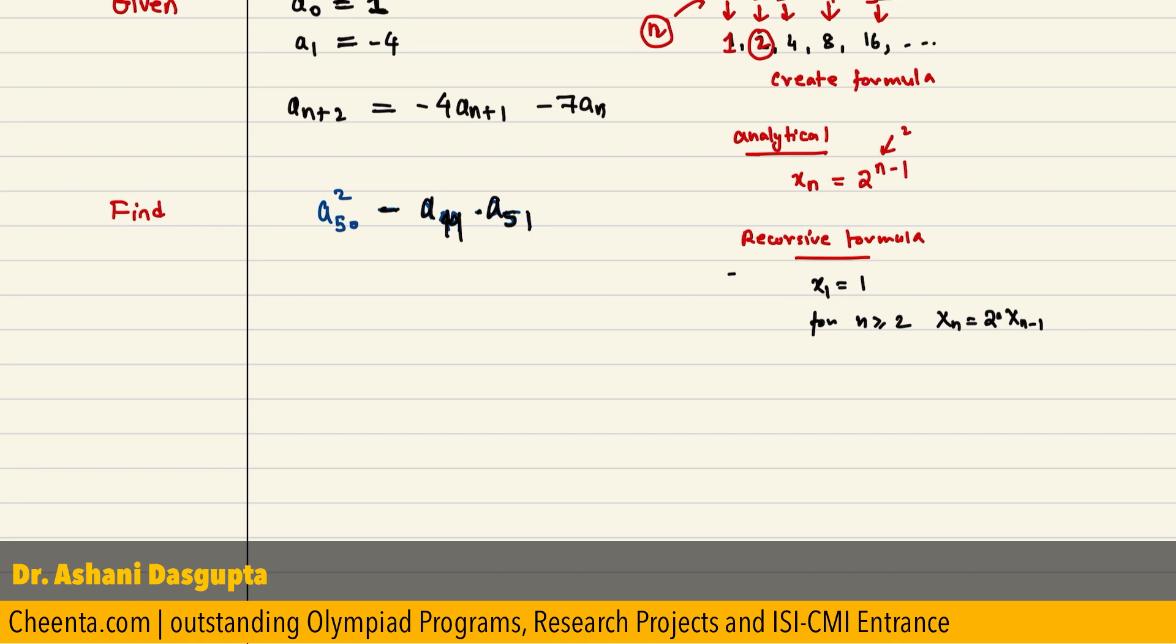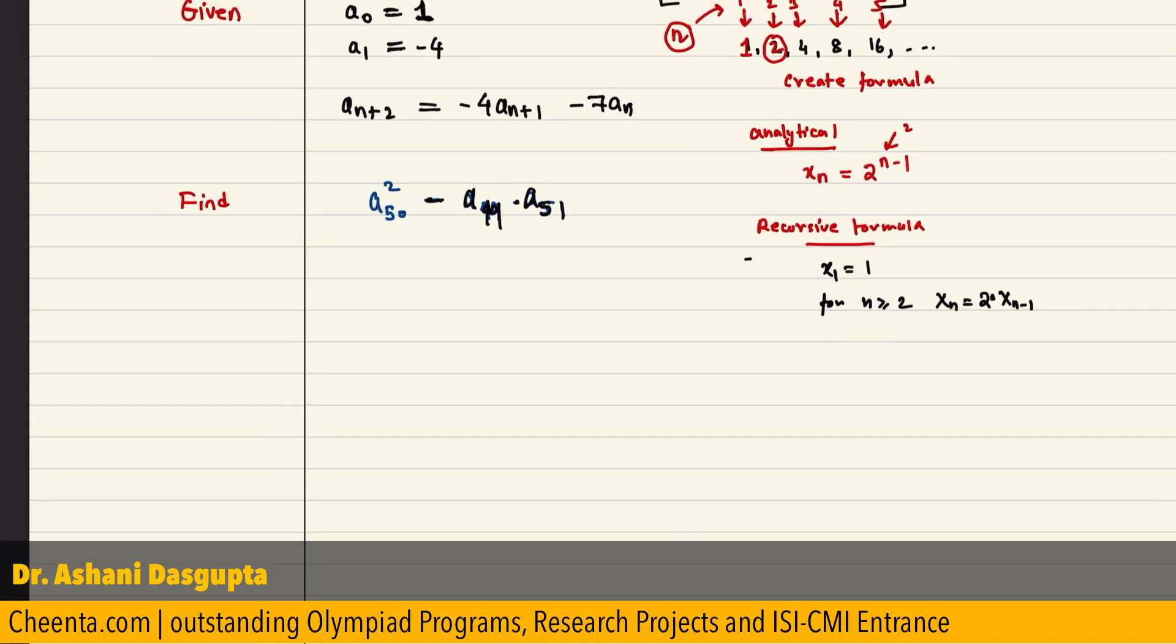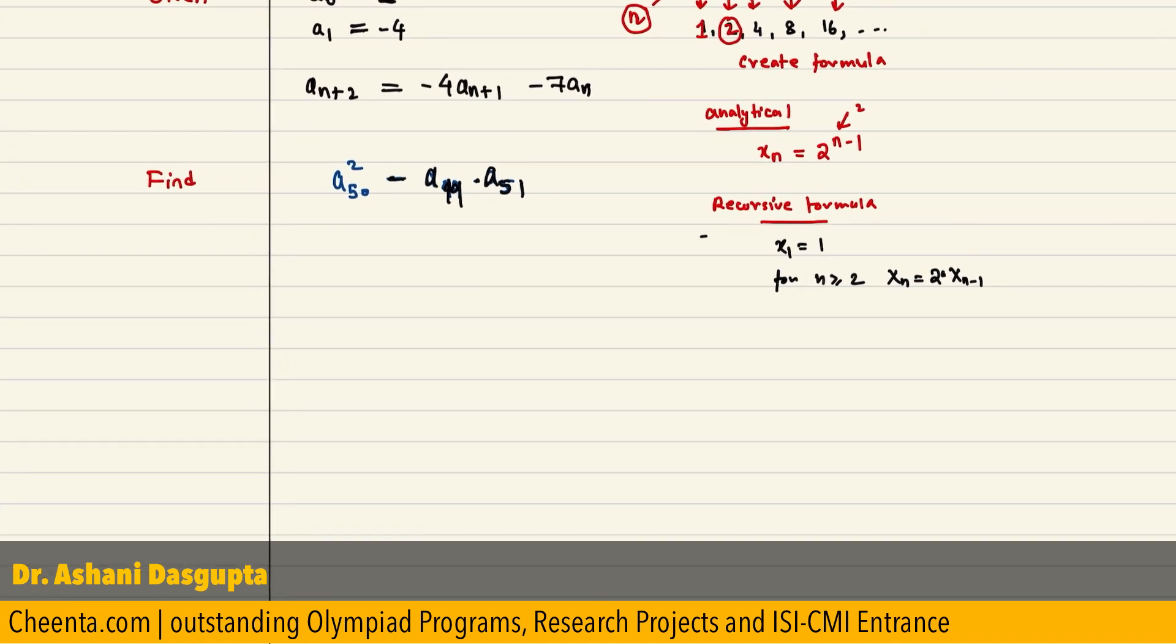So, how are you going to do this? There is a strategy called auxiliary sequence. In fact, we use auxiliary functions all the time when we solve olympiad problems.